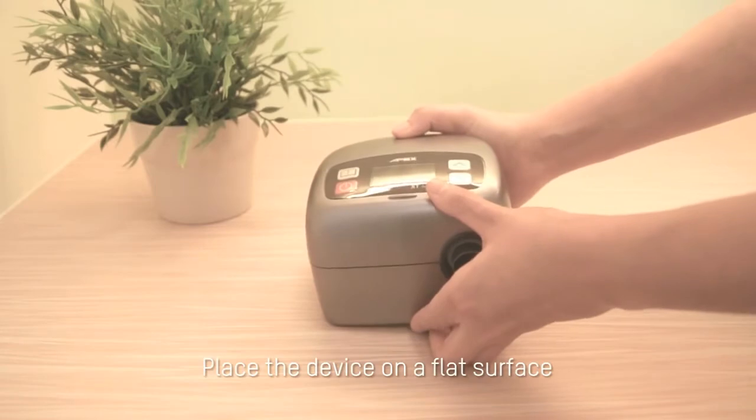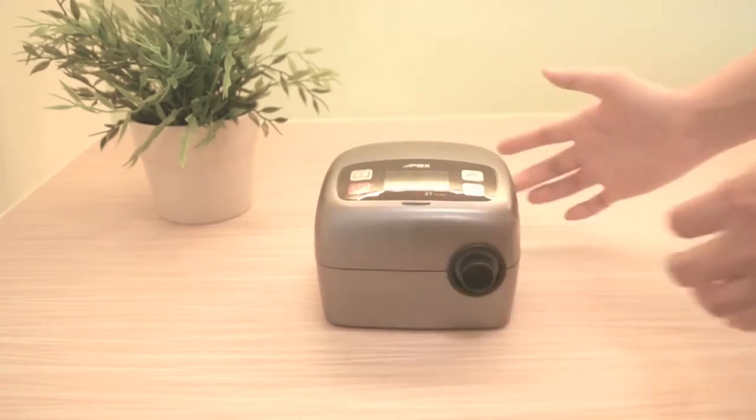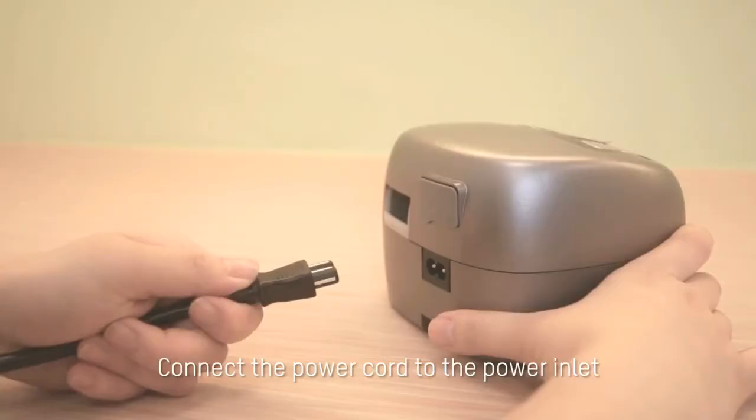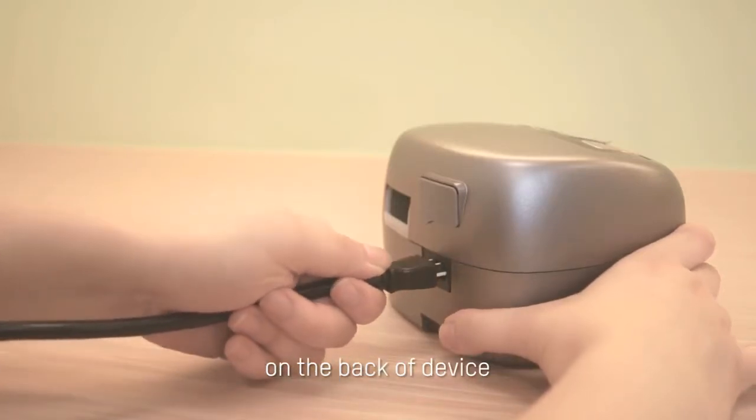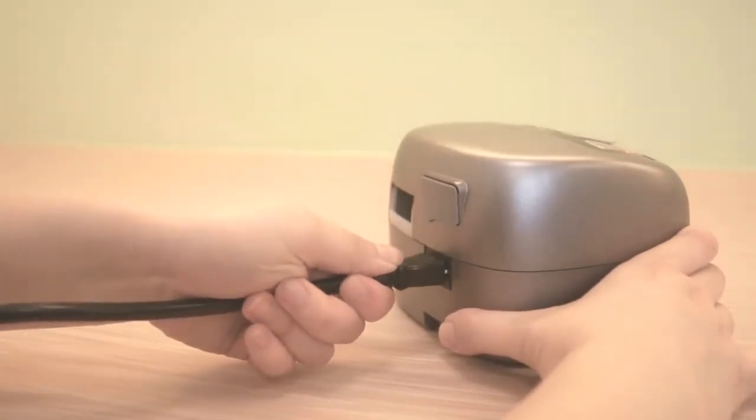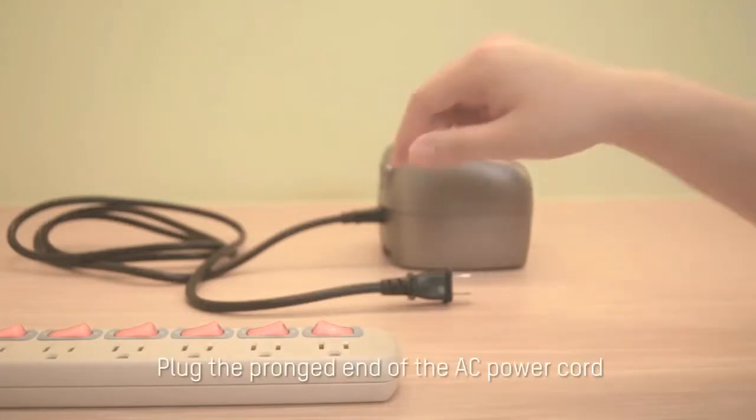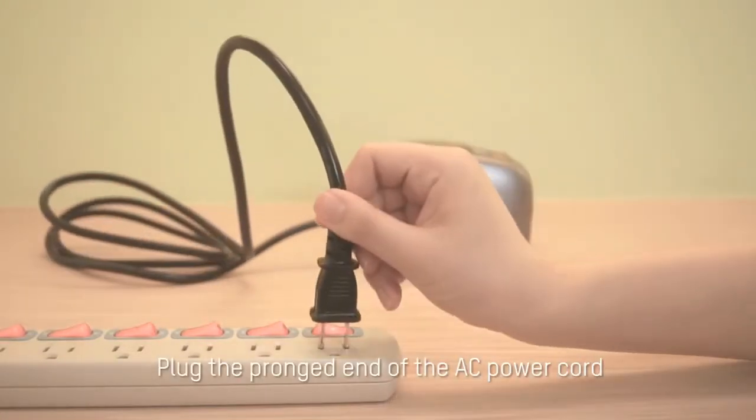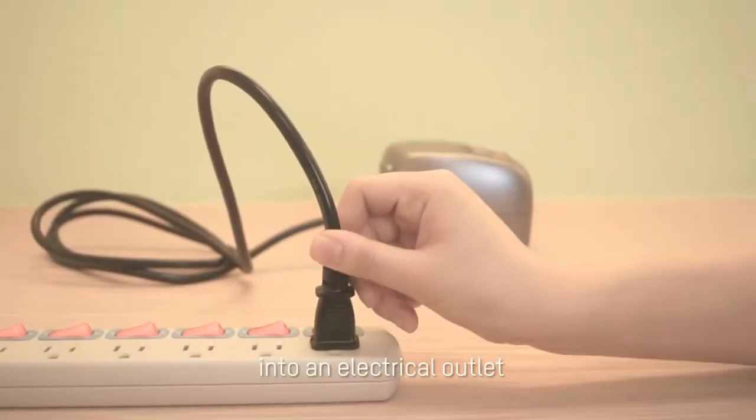Place the device on a flat surface. Connect the power cord to the power inlet on the back of device. Plug the pronged end of the AC power cord into an electrical outlet.